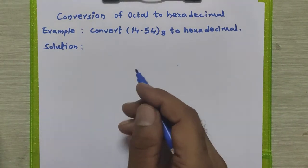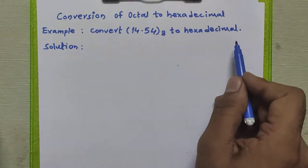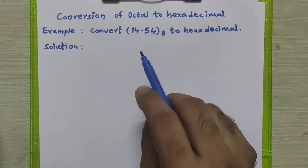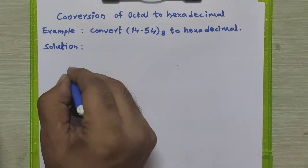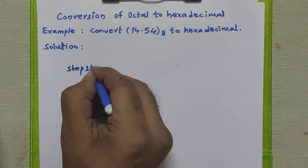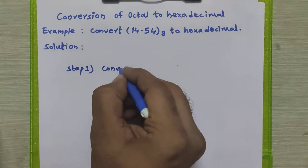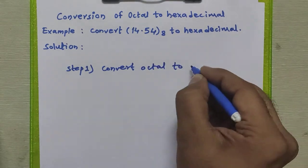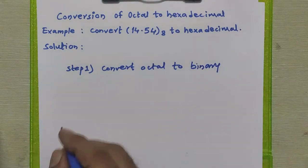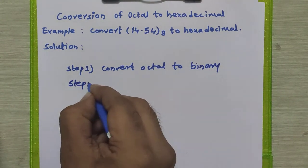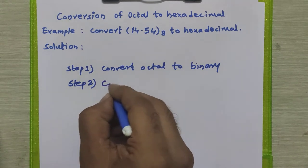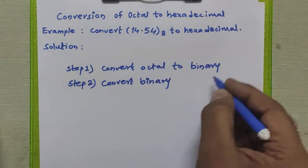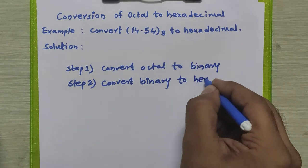There is no direct method to convert any octal number to hexadecimal number system. To do this we have to follow two steps. In step 1, we will convert the given octal number to binary, and then in step 2, we will convert that binary number obtained in step 1 to hexadecimal.